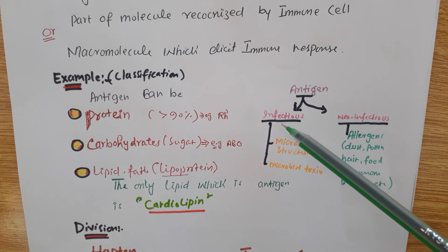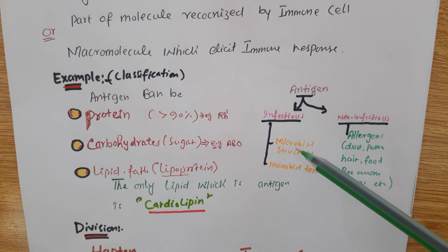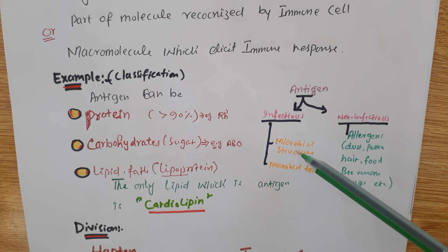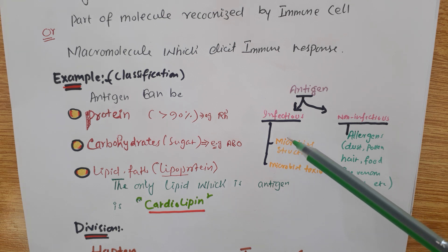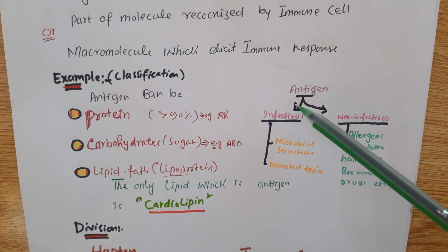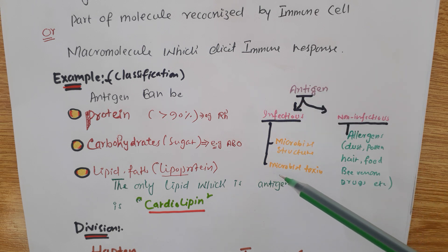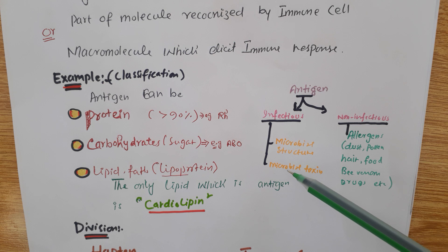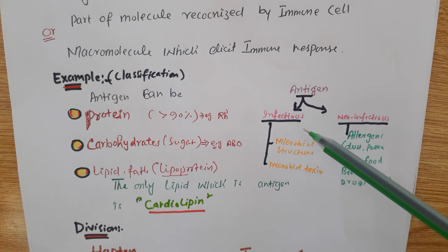This antigen can be infectious or non-infectious. Infectious microbial structures like cell wall, flagella, pili — whatever is in the structure of microbes, in viruses and bacteria — that is going to be infectious antigen. Some microbes can also secrete toxins, so microbial toxins can also be antigens.